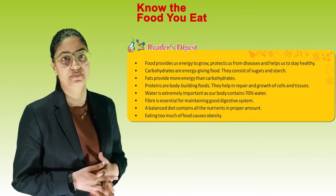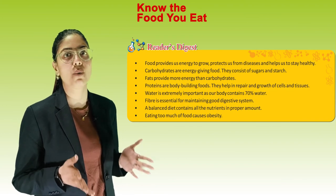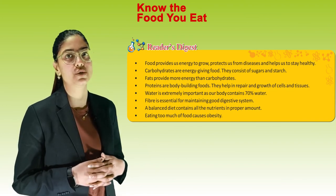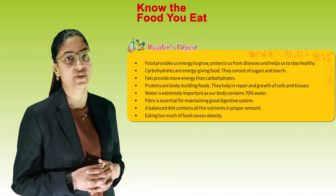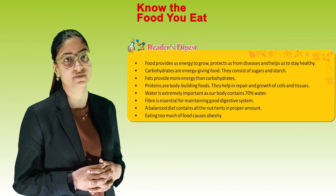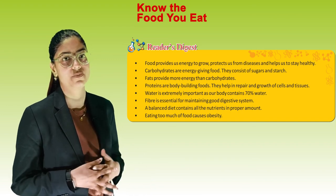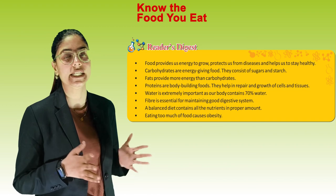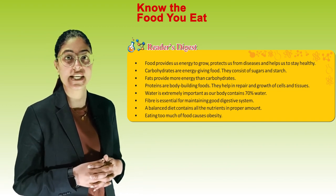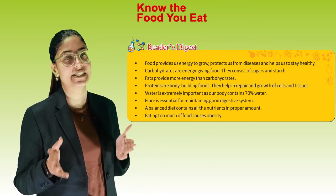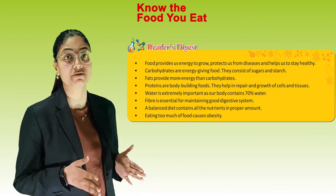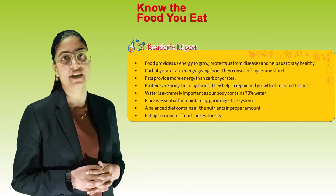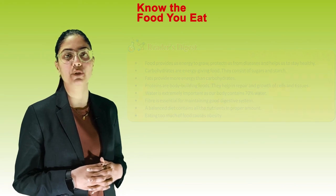Let's do a quick revision. Food provides us energy to grow, protects us from diseases and helps us to stay healthy. Carbohydrates are energy-giving foods consisting of sugars and starch. Fat provides more energy than carbohydrates. Proteins are body-building foods that help in repair and growth of cells and tissues. Water is extremely important as our body contains 70% water. Fiber is essential for maintaining a good digestive system. A balanced diet contains all nutrients in proper amounts. Eating too much food causes obesity. Thank you, children — we have completed this chapter!